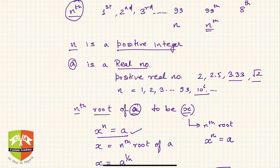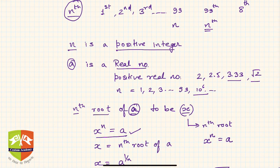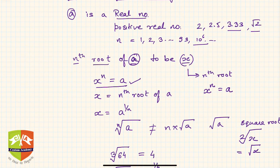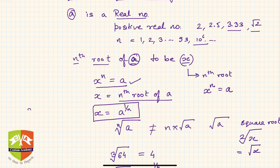So the nth root of any positive number is another number such that when raised to the power n, you get the desired number. Also remember: when x is the nth root of a, we express x as a to the power 1/n. So if x^n = a, then x = a^(1/n). Notice that the powers are reciprocated — whatever was the power n on x becomes 1/n on a.